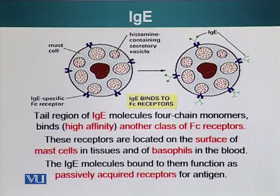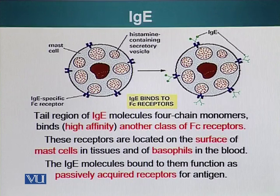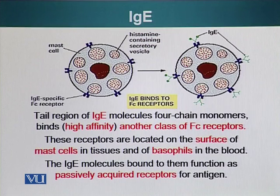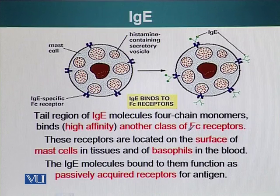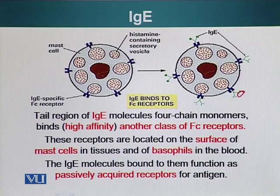IgE antibodies are secreted by B cells and then bind a different type of white blood cell, such as a mast cell. Mast cells have FC receptors that bind the FC region of IgE antibodies, so these mast cells passively acquire the antibodies — they do not make antibodies of their own. IgE molecules decorate the surface of these cells, and once an antigen binds to these antibodies, they cause the release of histamine, which can cause vasodilation, leaky blood vessels, and allergy.